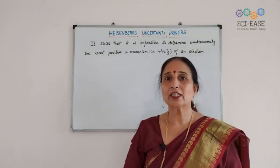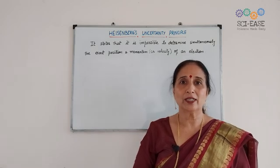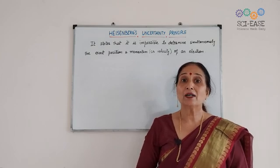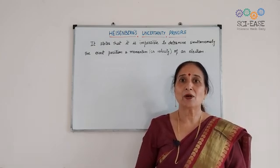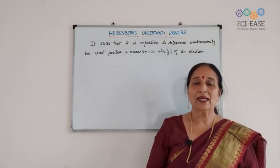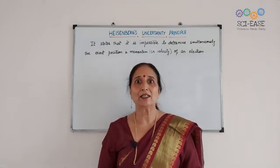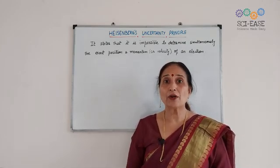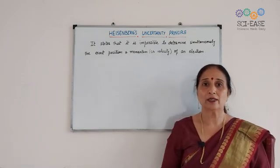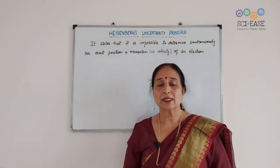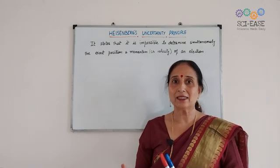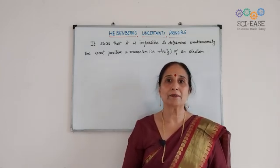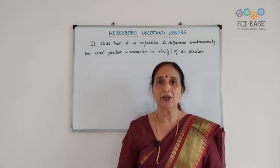In view of the shortcomings of the Bohr model, attempts were made to develop a more appropriate model of an atom, that is, the quantum mechanical model of an atom. Two developments which contributed significantly to this model: one was the Dual Behaviour of Matter, given by de Broglie, and the second one is Heisenberg's Uncertainty Principle, given by Werner Heisenberg.